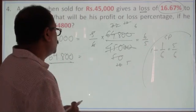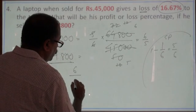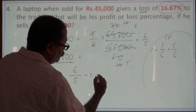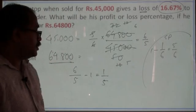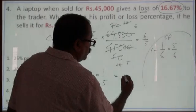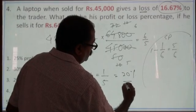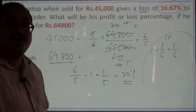How much profit? So, 6 by 5 minus 1 which is equal to 1 by 5. One-fifth is the profit and we all know one-fifth is equal to 20%. So, there is a profit of 20%.